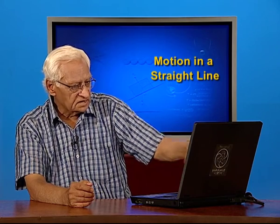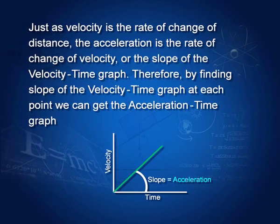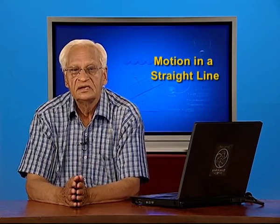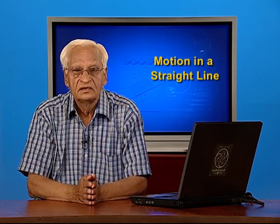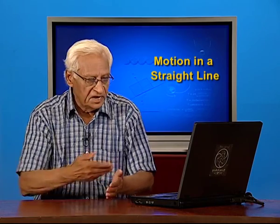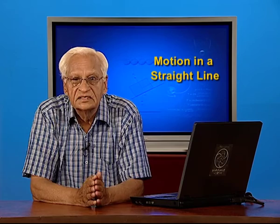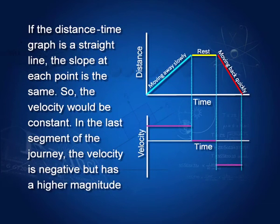To repeat: the slope of the distance time graph shows us the velocity. If we have a velocity time graph, then its slope would show us acceleration, because velocity divided by time is acceleration. Therefore, if we have a velocity time graph, then its slope would be acceleration. If the graph is linear, that means the acceleration is uniform, and most of the time in earlier classes we deal with uniform acceleration.